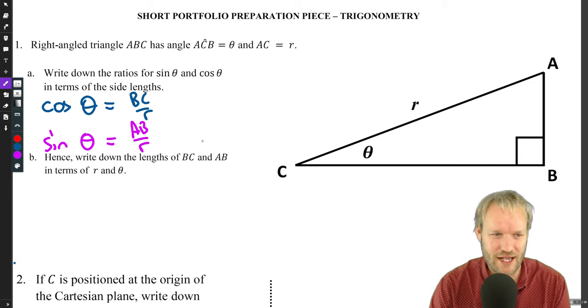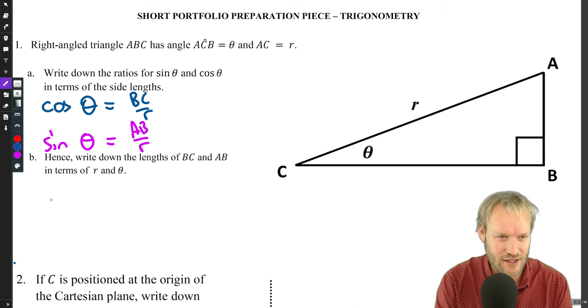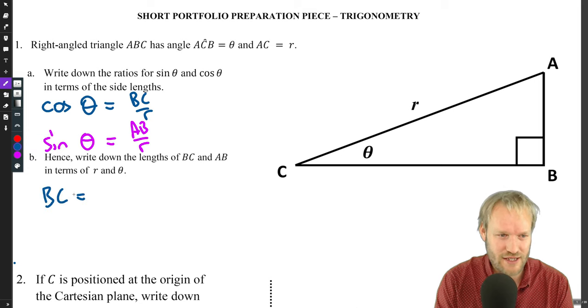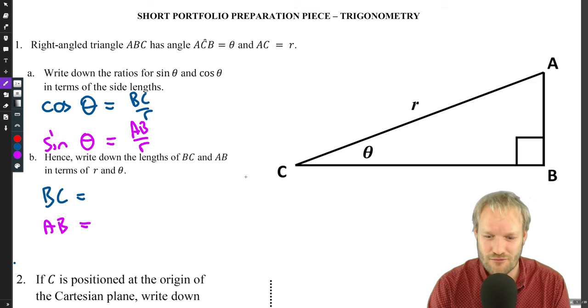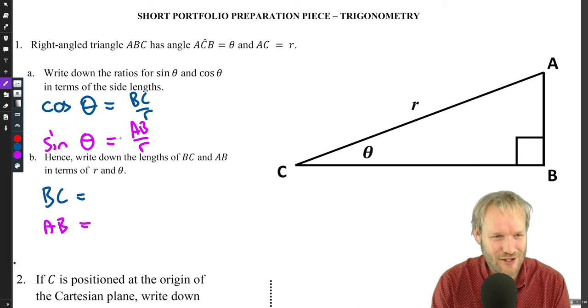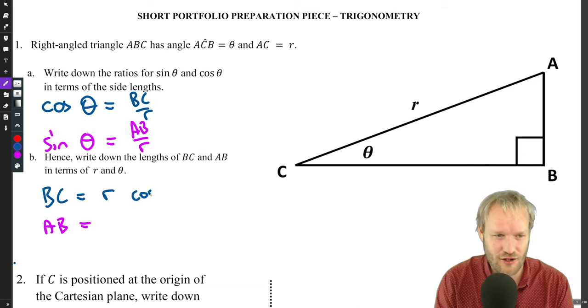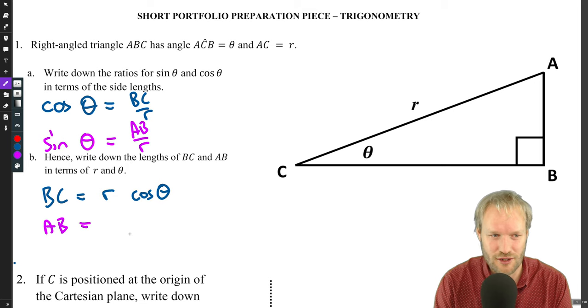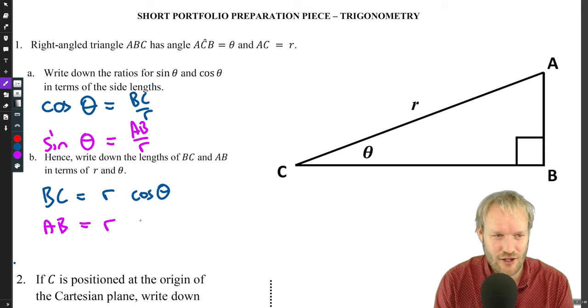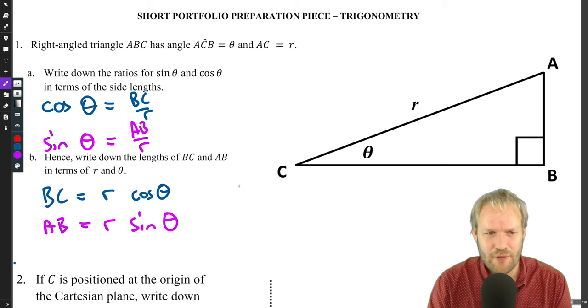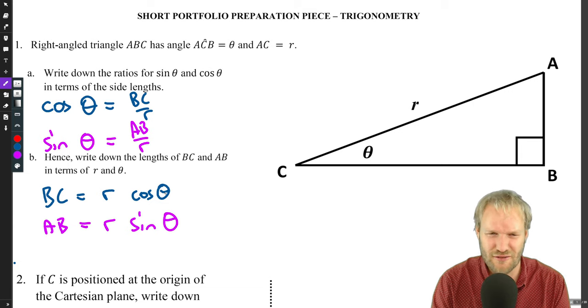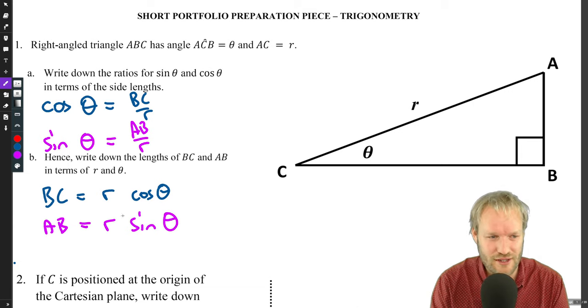Hence write down the lengths of BC and AB in terms of R and theta. We want BC equals something and AB equals something. BC we just multiply the first equation both sides by R and we have R cos theta. In the second case we also multiply both sides by R so we have R sine theta. Makes more sense to write it R cos theta not cos theta R.